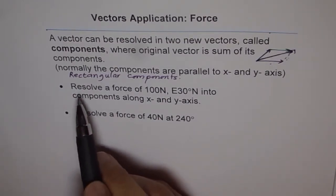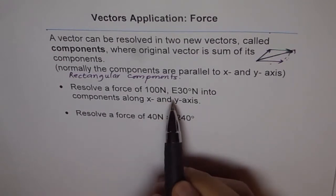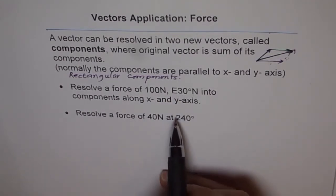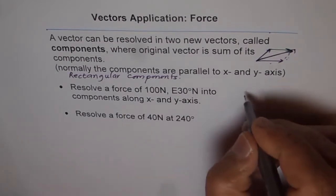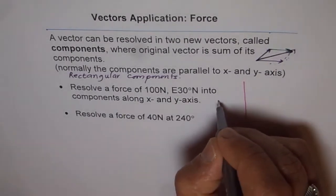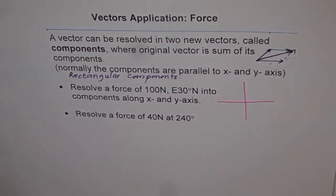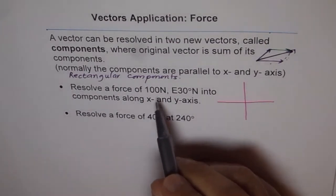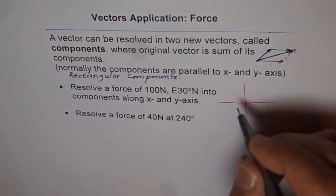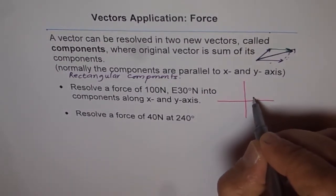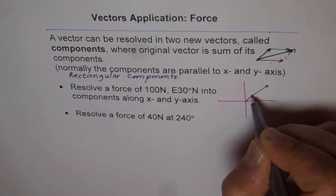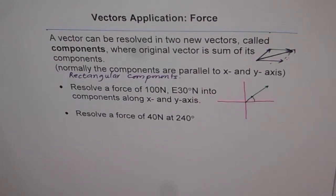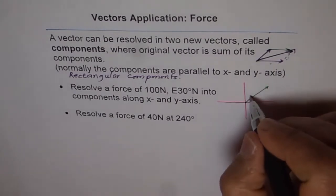Here is the first example: resolve a force of 100 newtons whose direction is from east 30 degrees north into components along the x and y axis. Let me sketch this. We have a coordinate system and a force of 100 newtons directed 30 degrees north from east, so this line represents 100 newtons.